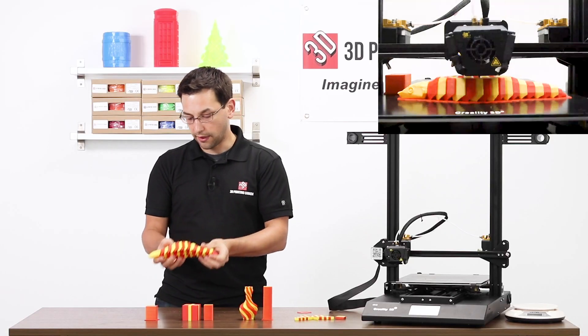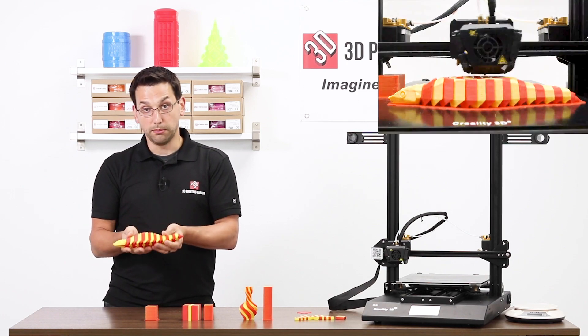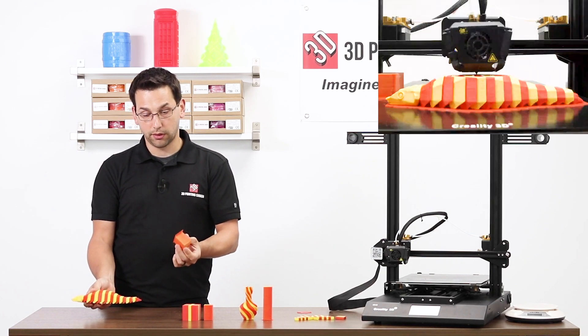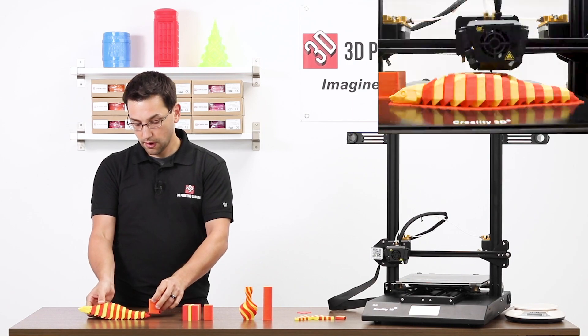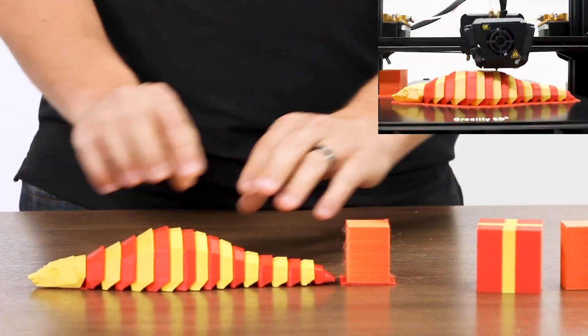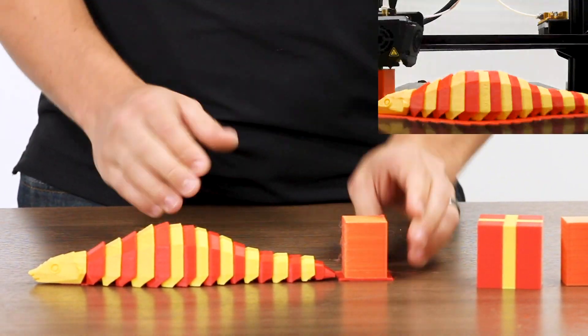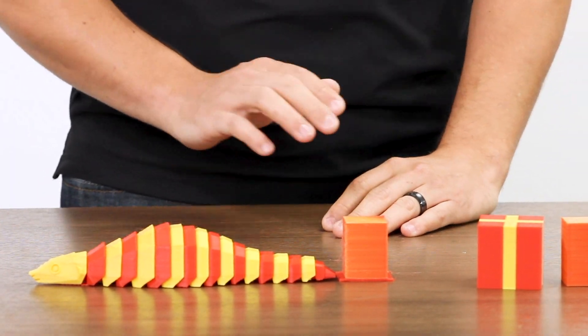But nonetheless, you get a lot of object printed for a rather small amount of waste or purge. And again, simply because you have to purge each layer. So we have a very wide item, but not a whole lot of Z height to it.